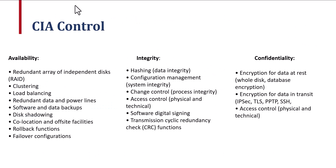Now we will see the information security measures to protect confidentiality, integrity, and availability of information. For availability: redundant array of independent disks (RAID), clustering, load balancing, redundant data and power lines, software and data backups, disk shadowing, colocation and off-site facilities, rollback functions, and failover configurations.